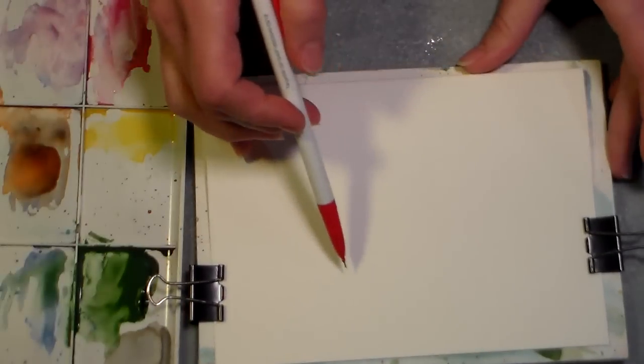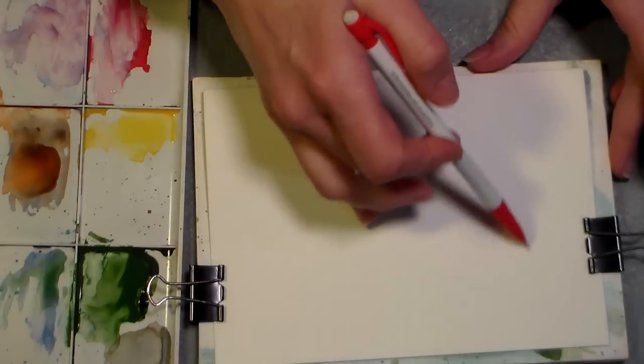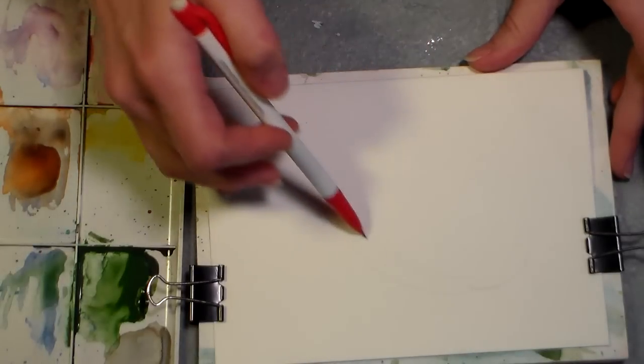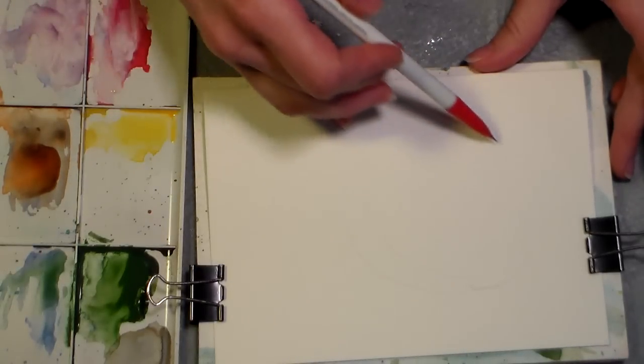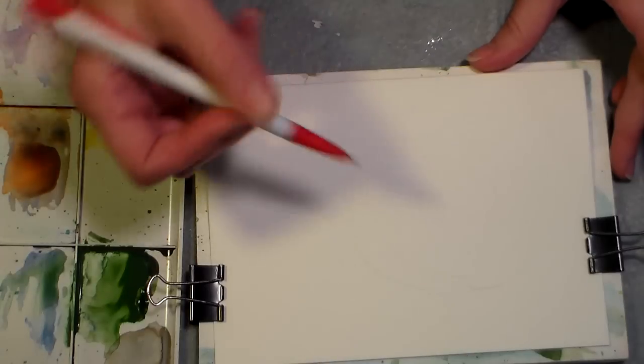Watch the tip of my pencil here. I'm gonna draw an oval, this is going to represent where my flower is going to be. I'm drawing that really light, so if you just look at the tip of my pencil you can see where I've drawn it.